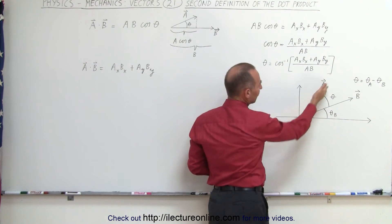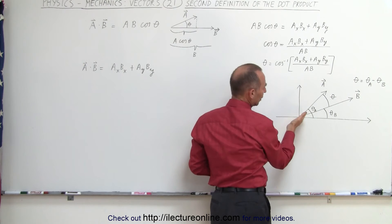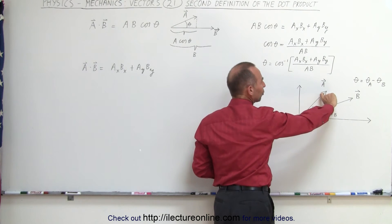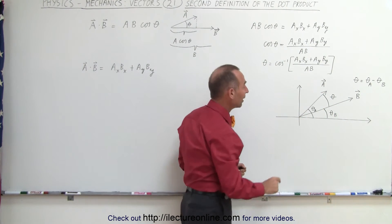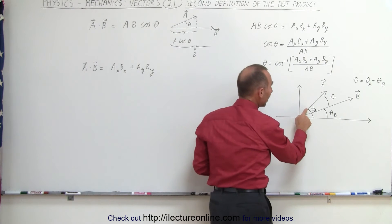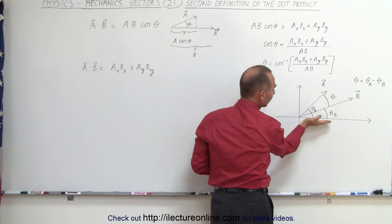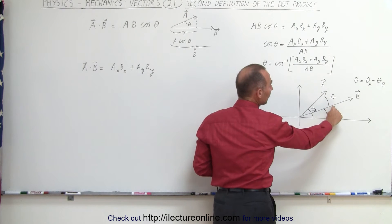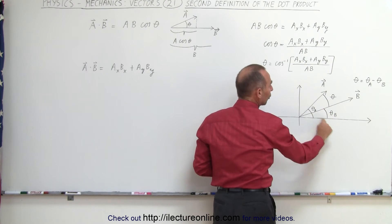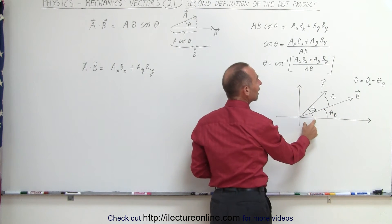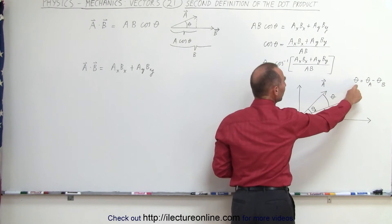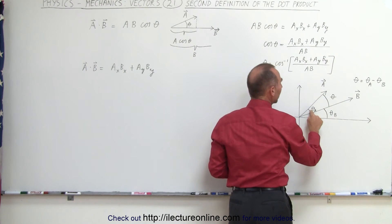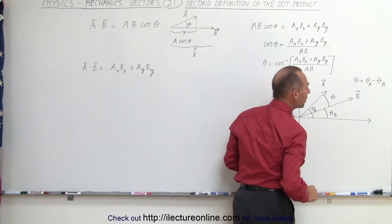So here we have the A vector, here we have the B vector, and the angle between them is theta. Also notice that I have an angle relative to the A vector relative to the horizontal axis, and an angle of the B vector relative to the horizontal axis. You can see then that the angle theta between the two vectors is simply equal to theta sub A minus theta sub B.